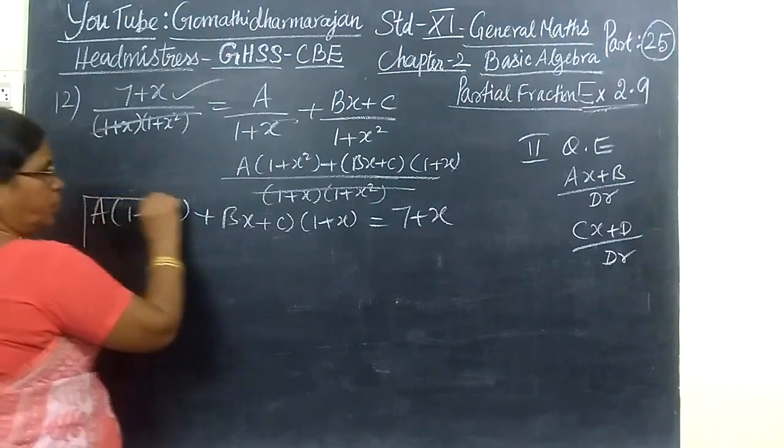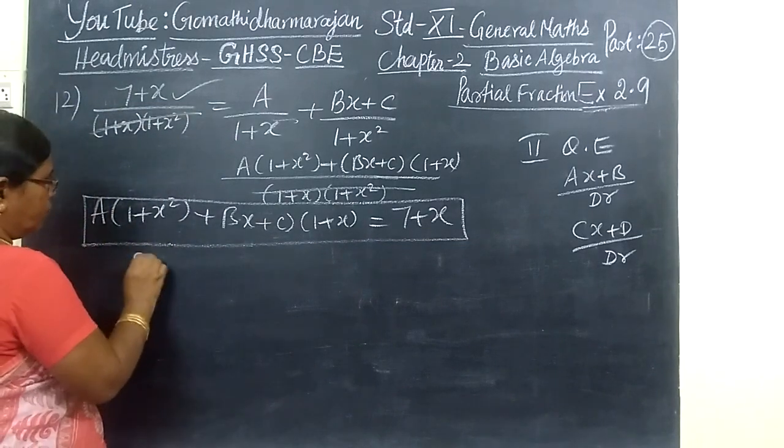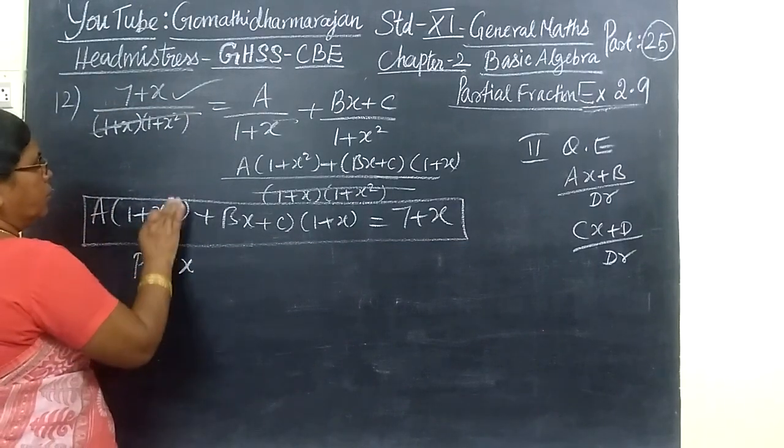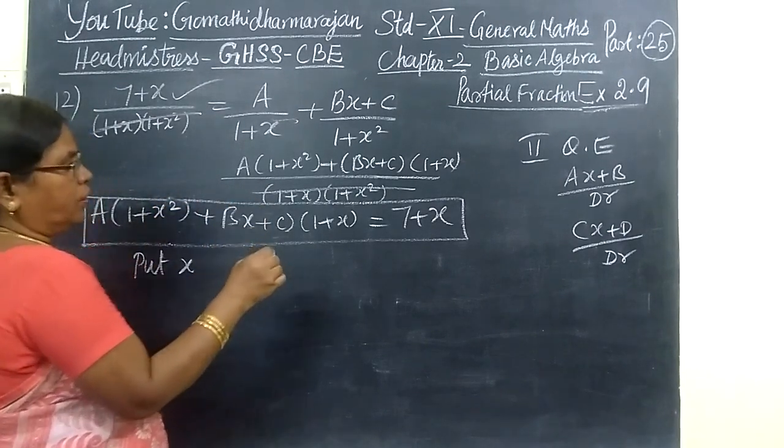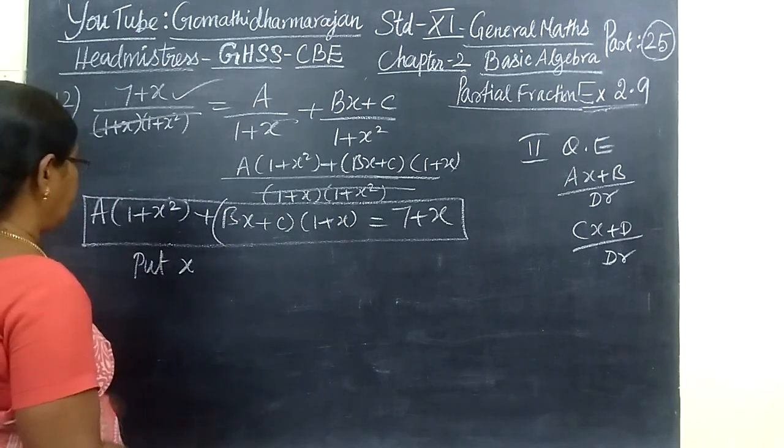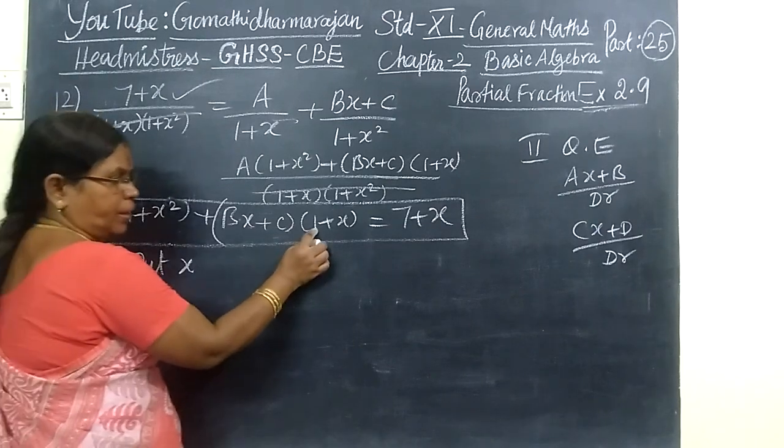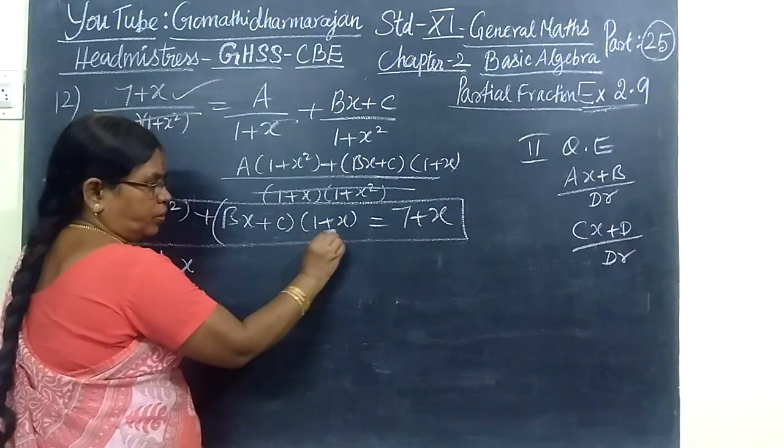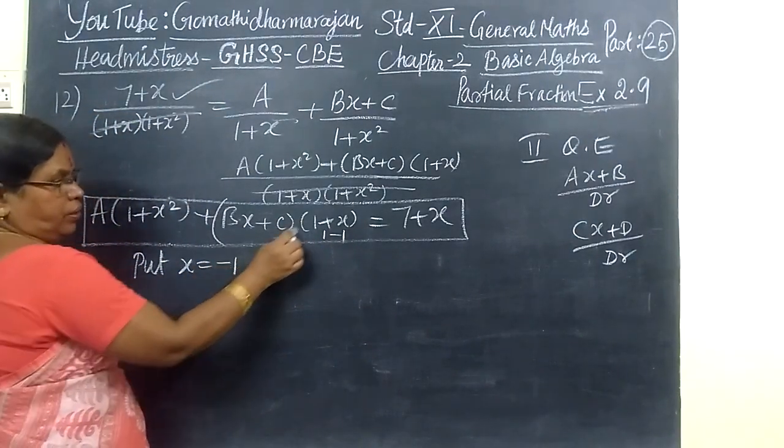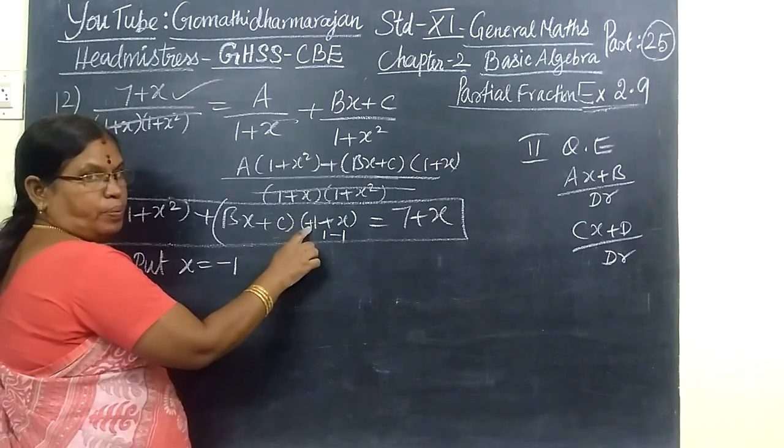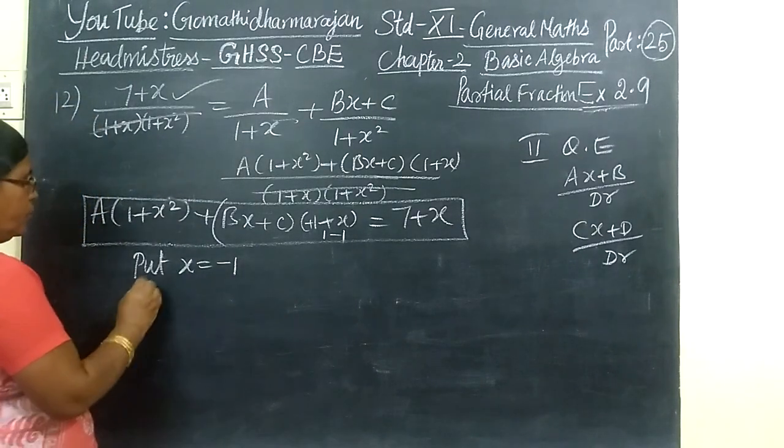The numerator here, now the box for the result. You write as it is. Now you put x equal to minus 1 to make this bracket zero. So put x equal to minus 1. x is plus 1, x is minus 1. So plus 1 means you write minus 1 so that it will be getting cancelled to zero immediately.